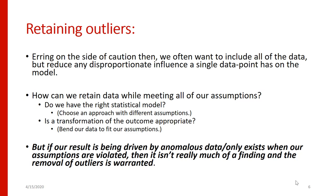Erring on the side of caution, we want to try to include all of the data, but we still want to reduce any disproportionate influence that a single data point might have on our statistical model. This is why we don't want to delete outliers unless we know they are definitely an error. One thing to consider is whether we have the right statistical model. When we talk about the families of generalized linear models, there are lots of different models we can adopt — not all of them assume a normal distribution of residuals, or they might have link functions that allow us to look at other types of dependent variables.